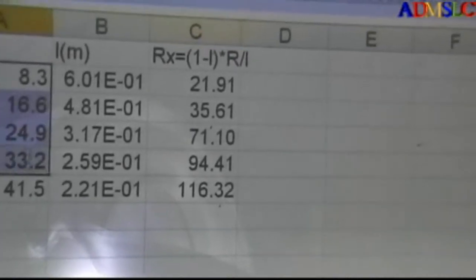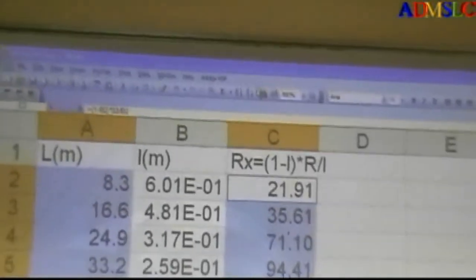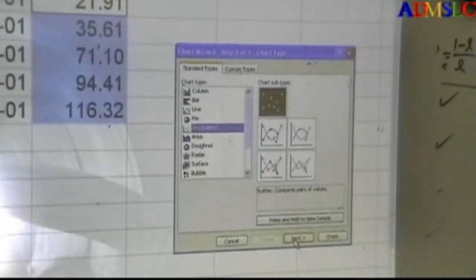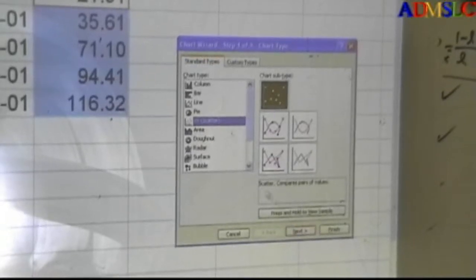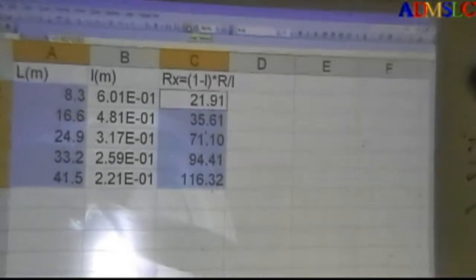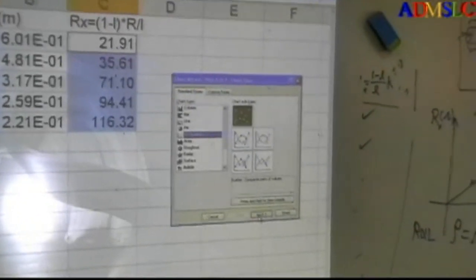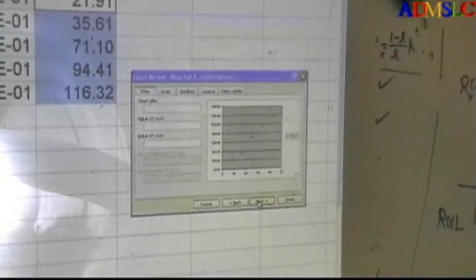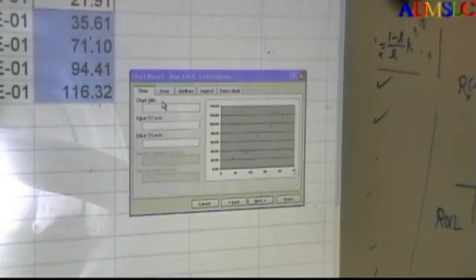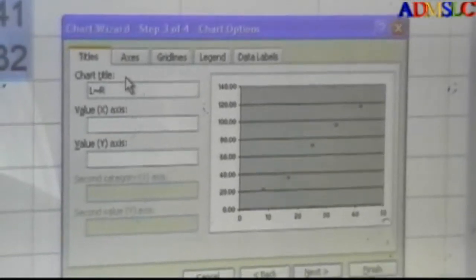I will plot now between this and this. Go to the plot. Select the... again, I select this and select this. Go to the chart wizard, select the XY scatter. Next, next. This legend, I want to cancel it. Title of the chart: it's R-L relation.